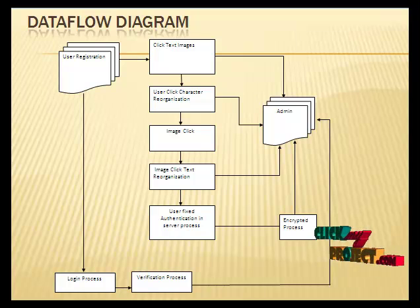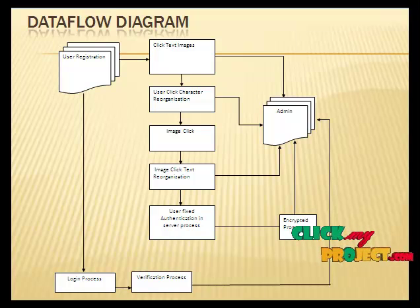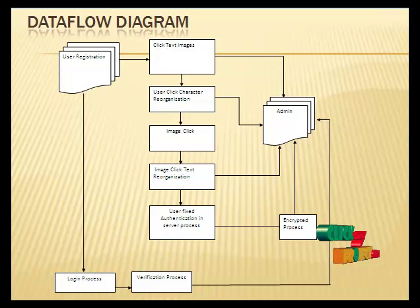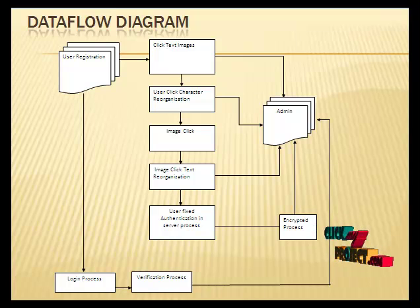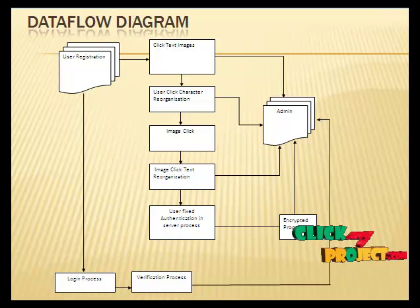What is the salt algorithm? Salting is a way to randomize hashes by adding a random string before your password is hashed, which makes it much more difficult to crack the password hash.